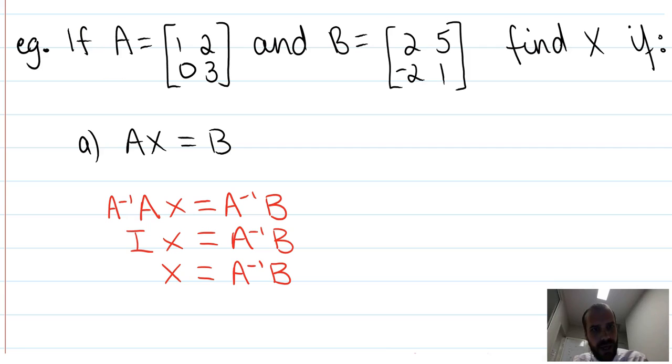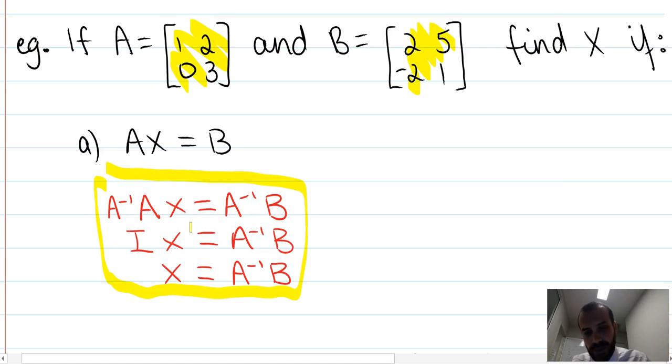If A equals this matrix and b equals this matrix, find x if A times x equals b. All right, so this is just a rehash of everything we just did up the top, and we can say that A times the inverse times A x equals A times the inverse b. So we have to pre-multiply here.